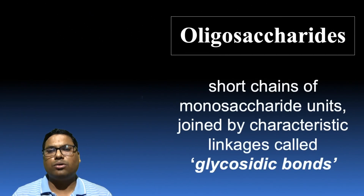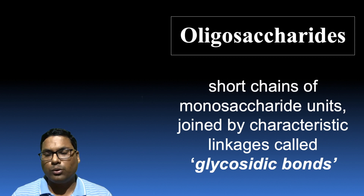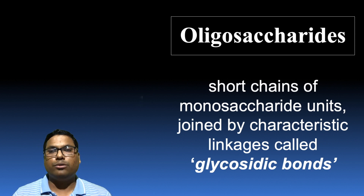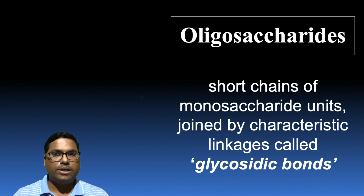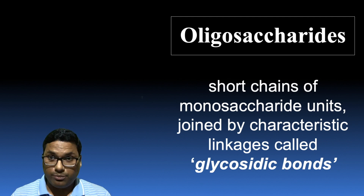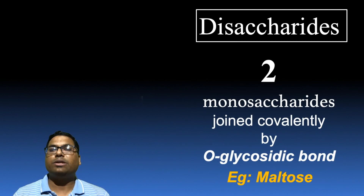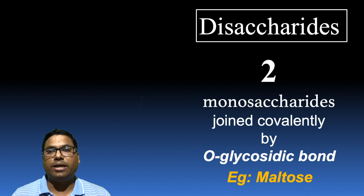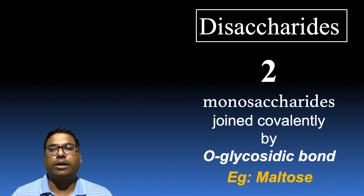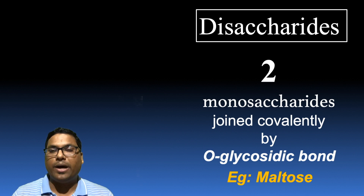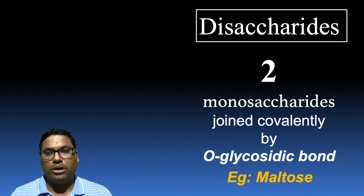Oligosaccharides are called so because they are short chains of monosaccharide units joined to each other by a characteristic linkage called a glycosidic bond. In oligosaccharides, we will see a few examples of disaccharides. Disaccharides have two monosaccharide units joined together covalently by the glycosidic bond.